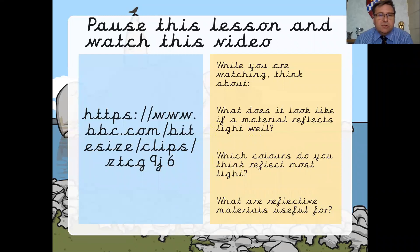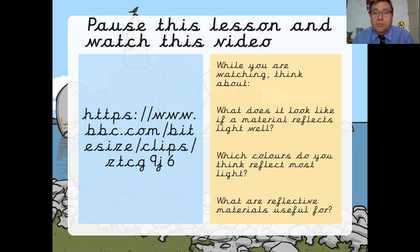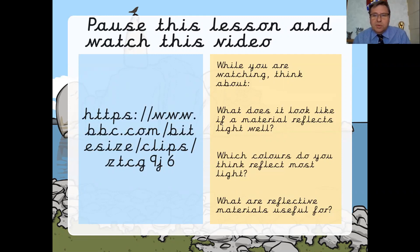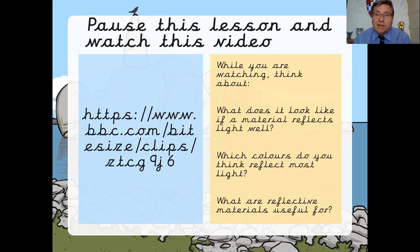The first thing I want you to do is write down this address — it's a video clip. I want you to watch it and whilst you're watching think about: what does it look like if a material reflects light well, which colours do you think reflect light well and why, and what reflective material is really useful for. Pause this video, watch the BBC clip, think about those questions, and then come back to me.